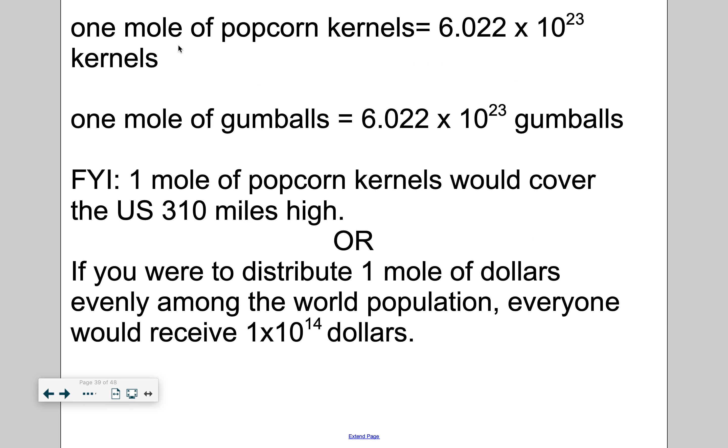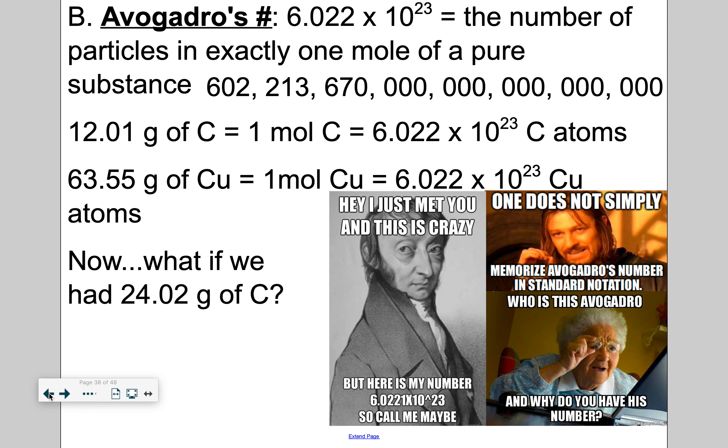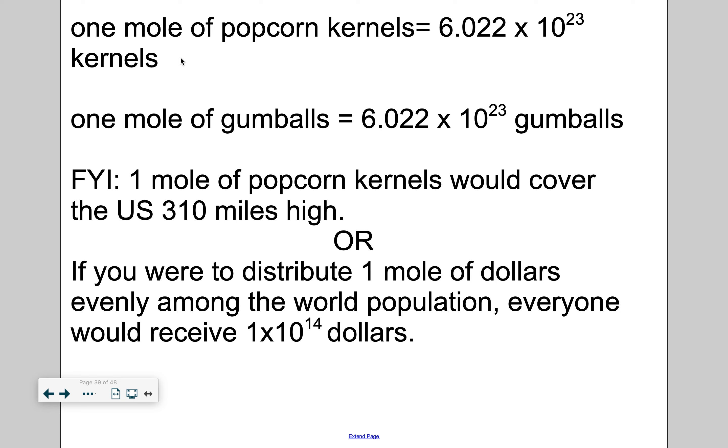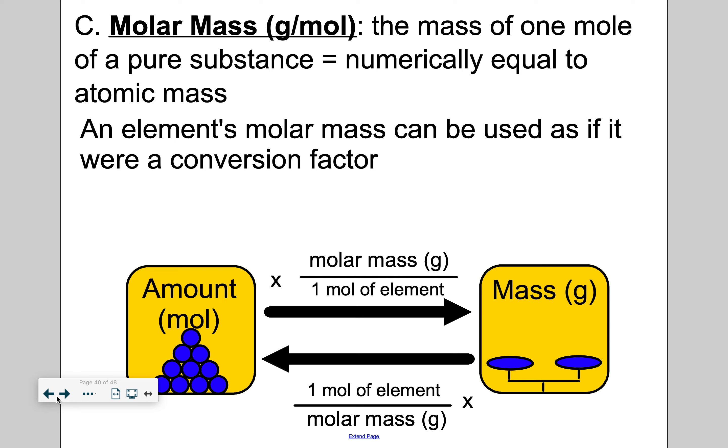So to give you a perspective as to how big Avogadro's number is, I wrote it in standard notation for you here, but this number is really big. If I measured out a mole of popcorn kernels, I would have 6.022 times 10 to the 23rd kernels, or a mole of gumballs, 6.022 times 10 to 23rd gumballs. And FYI, if I had a mole of popcorn kernels, you could cover the U.S. 310 miles high. Or if you were to distribute one mole of dollars evenly among the population of the world, everyone would receive that amount of money, 1 times 10 to the 14th dollars. That'd be nice. Actually, no. Inflation would skyrocket.